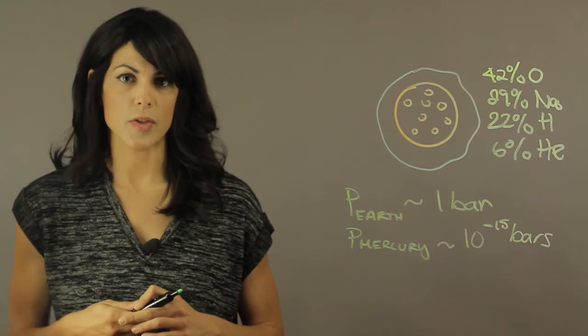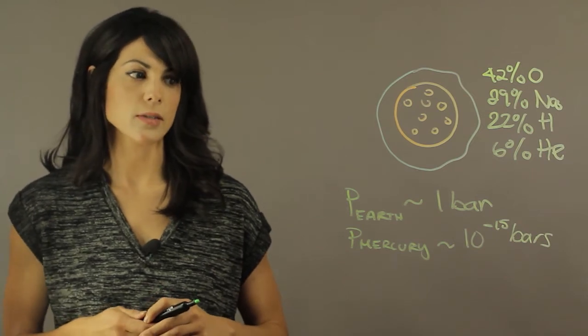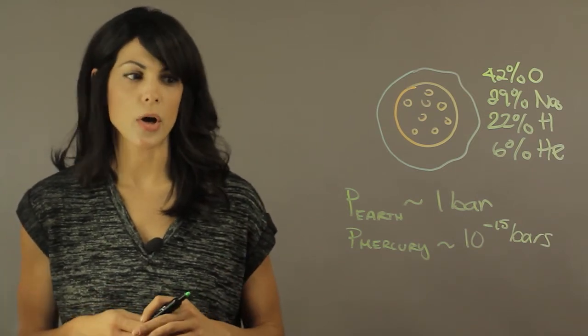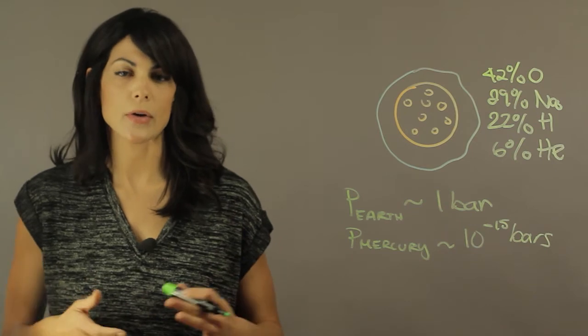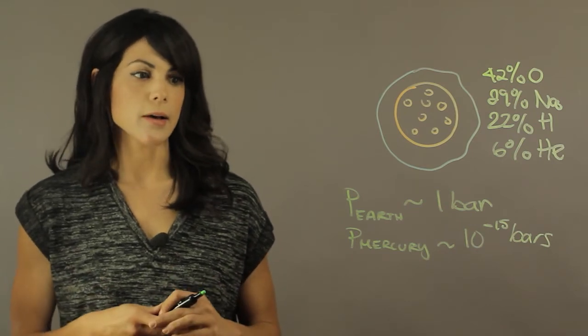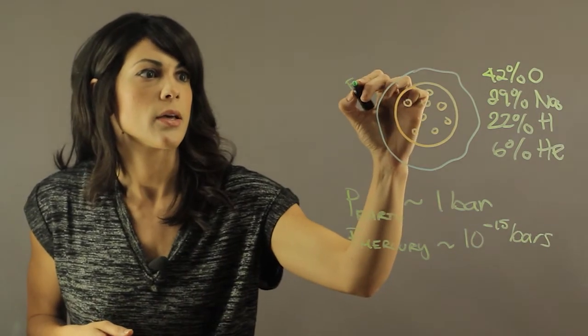It's 1 femto of the atmosphere of Earth. So that's the atmospheric pressure of Mercury and that's due to the lack of actual atmosphere. And you should probably call it an exosphere.